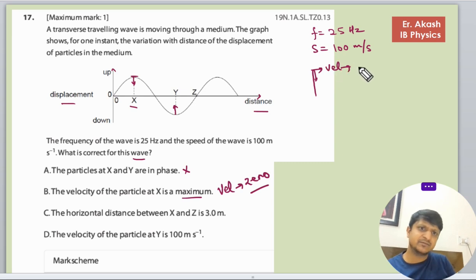Option C: The horizontal distance between X and Z is 3.0 m. So the distance, we need to calculate the lambda first that we don't know. So the lambda means how much the wave is traveling in one T.